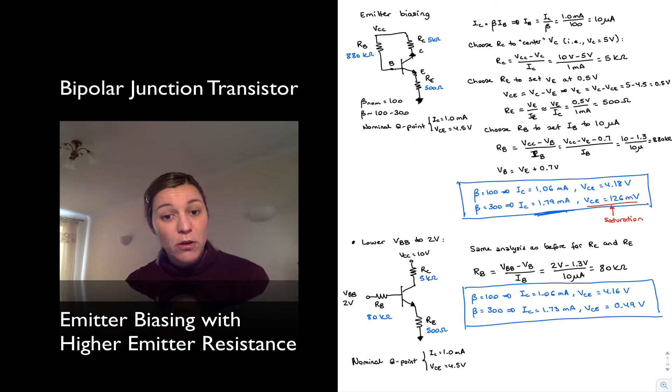Then we made a slight modification where we lowered our base supply voltage to 2 volts, so lower than VCC, and we got a slight improvement. At least we don't go into saturation, but again still quite a lot of variation, especially with respect to the VCE voltage from the nominal case where beta was 100 and we got 0.16 volts to the case where beta was 300 and we got 0.49 volts.